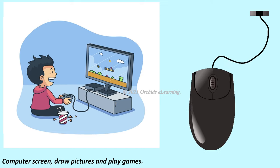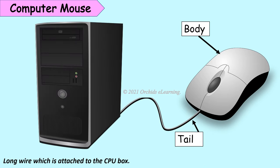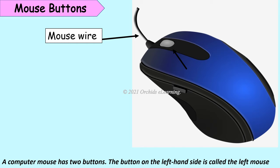A computer mouse is like a real mouse. It is small in size. It has a body and a tail. This tail is a long wire which is attached to the CPU box.